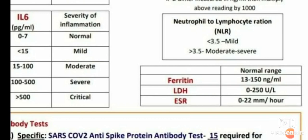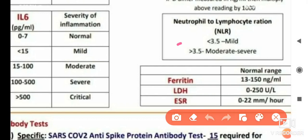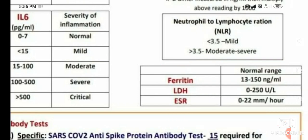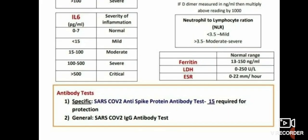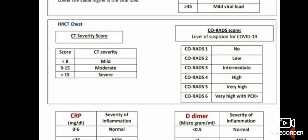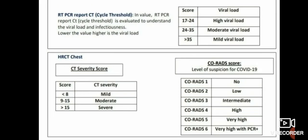The neutrophil-to-lymphocyte ratio is also assessed: if less than 3.5, it is mild; if more than 3.5, it is moderate to severe. Other inflammatory markers include serum ferritin — elevated levels indicate higher infection severity — LDH with a normal value of 0 to 250, and ESR with a normal value of 0 to 22.